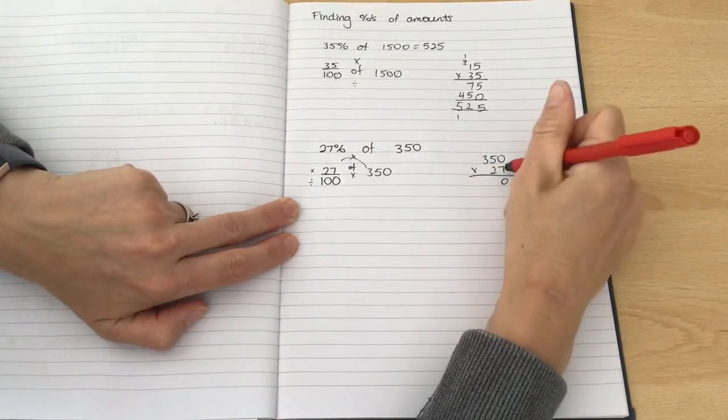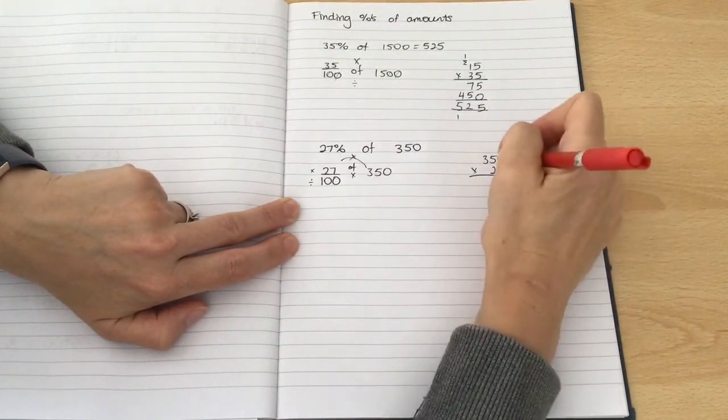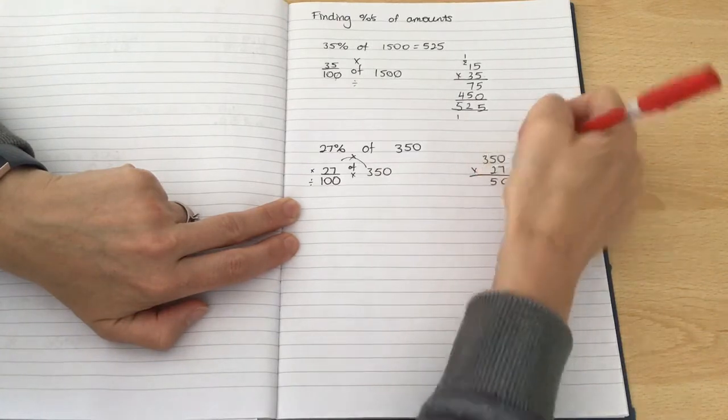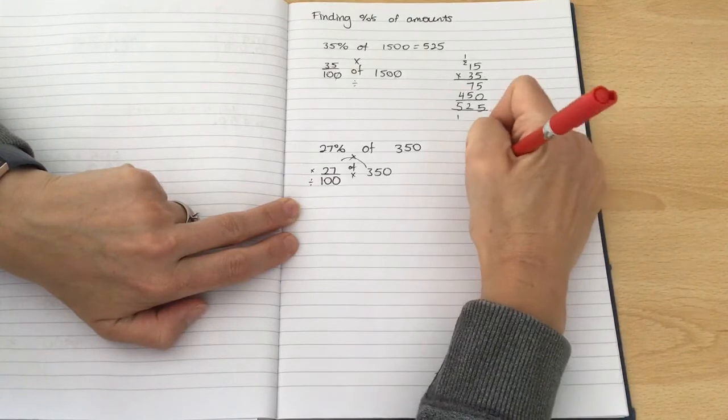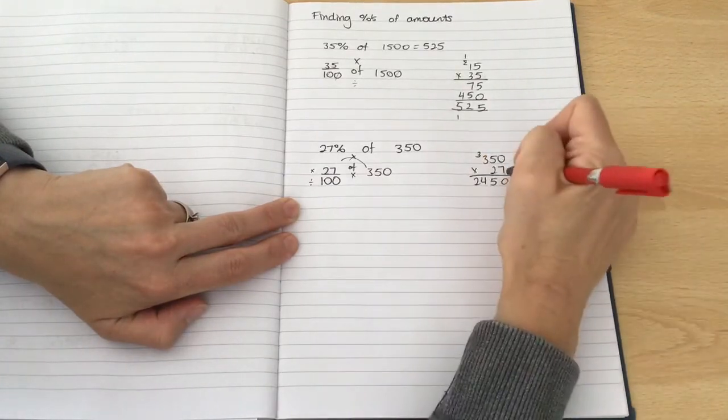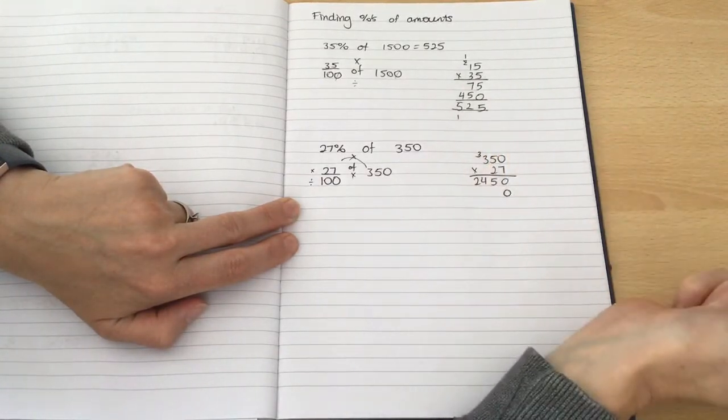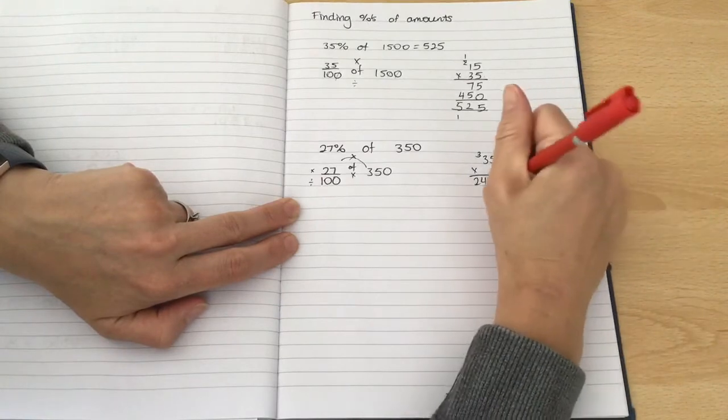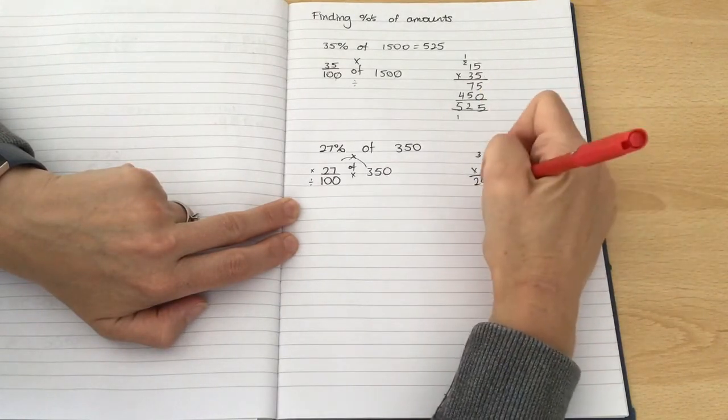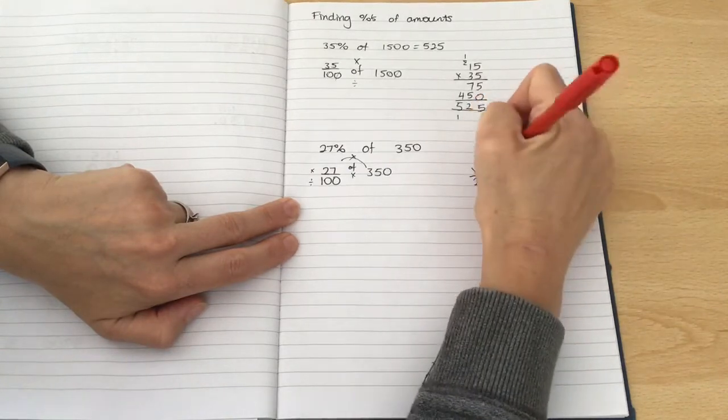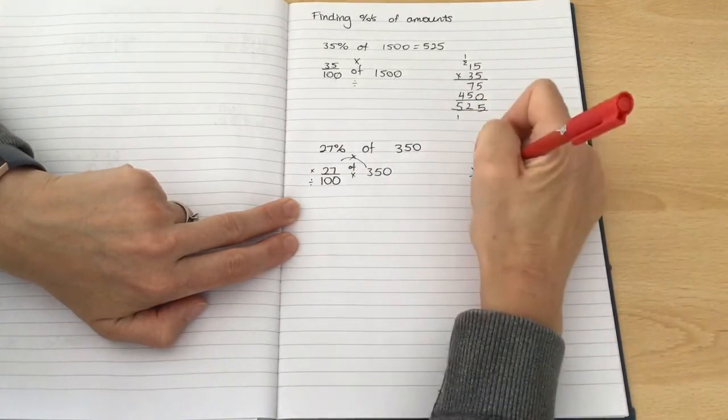7 times 0 is 0. 7 times 5 is 35. 7 times 3 is 21. Add the 3, we end up with 24. I'm now multiplying by 20, so I need to add a placeholder. 2 times 0 is 0. 5 times 2 is 10. And 2 times 3 is 6. Add the 1 is 7.